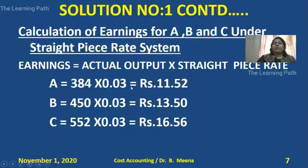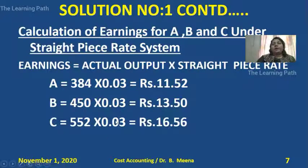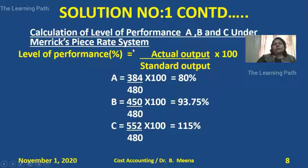Under the straight piece rate system, the formula is: earnings equals actual output multiplied by straight piece rate. Worker A's production is 384, Worker B's is 450, and Worker C's is 552 — each multiplied by the piece rate of 0.03 — giving us the earnings of A, B, and C under the straight piece rate system.